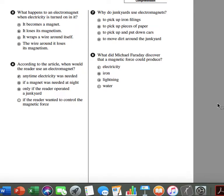Number 7. Why do junkyards use electromagnets? A. To pick up iron filings. B. To pick up pieces of paper. C. To pick up and put down cars. D. To move dirt around the junkyard.